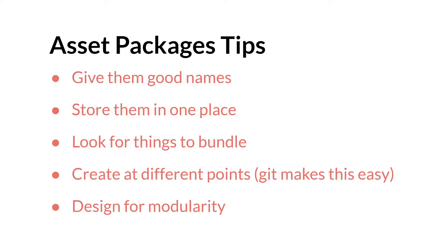The last step, I think, is just design for modularity. This is part of what I mean when I say look for things to bundle. When you are writing your code, think about how you create it as a self-contained unit. If you're making an inventory system, think about how you would make that inventory system independent of all of your other code, so you can just pull it out and reuse it as many different times as you want. Think about how you make that thing its own thing with as few dependencies on other parts of your code as you can, so you can easily make it into a local asset package and reuse it later on.